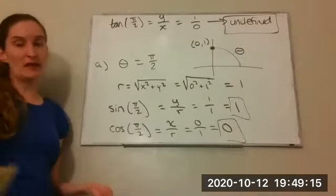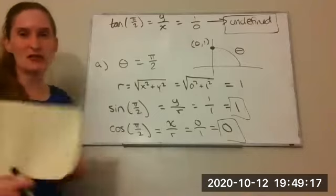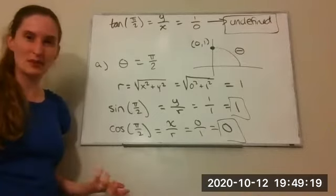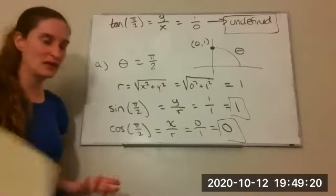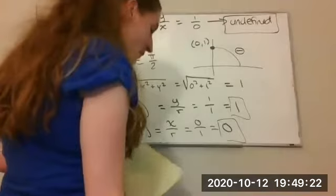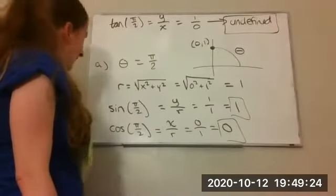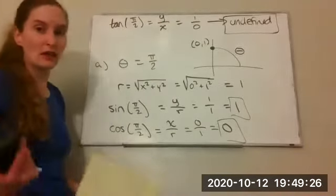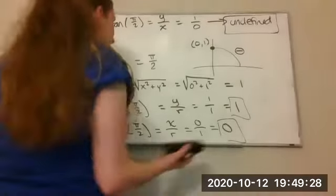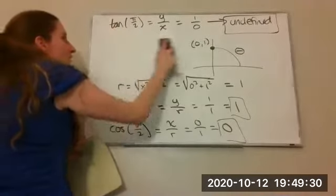For tangent of pi over 2, that's supposed to be y over x, but that would get me 1 over 0. That means tangent is undefined at this particular value. If you end up dividing by zero, it just means the function is undefined at that point. That can happen with tangent, cotangent, secant, or cosecant — but for sine and cosine, the function should always be defined.